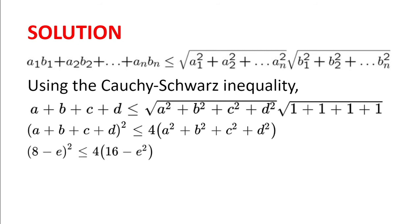Now after a little bit of rearranging, we get on the left-hand side 8 minus e squared, which is less than or equal to 4 multiplied by 16 minus e squared.